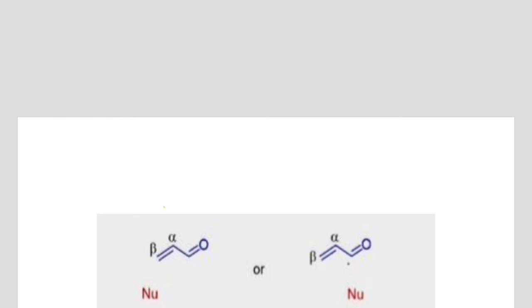Here we will study conjugate addition to the carbon-carbon double bond — 1,4-addition and 1,2-addition. If we number positions one, two, three, and four, then in conjugate addition a hard nucleophile attacks at the 1,4-position, meaning the beta position. But in 1,2-addition, the nucleophile attacks at the carbonyl carbon and the bond shifts towards oxygen.